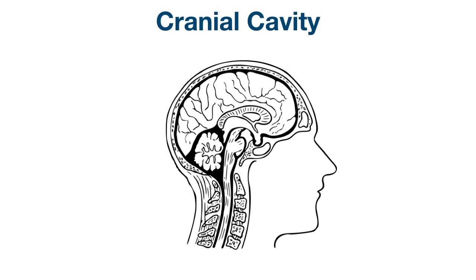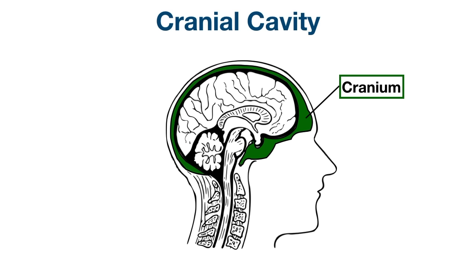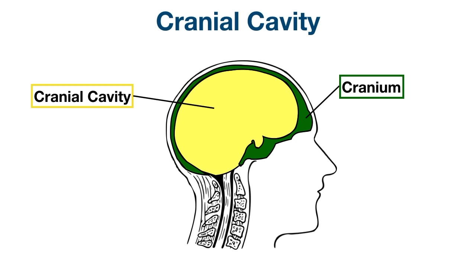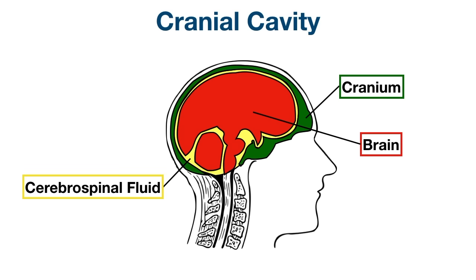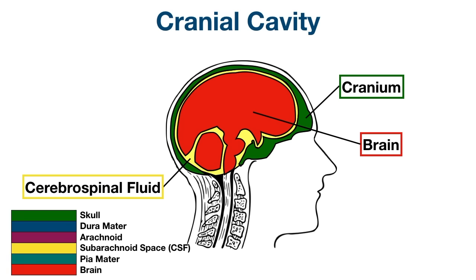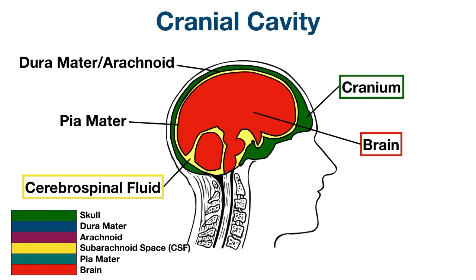We're looking at a side view — a sagittal view — of the brain and skull. The cranial cavity is enclosed by the cranium or skull, highlighted in green, which has formed an empty space shown in yellow. The cranial cavity contains the brain, colored in red. The cranial cavity also contains cerebrospinal fluid or CSF, which helps protect and cushion the brain, located in the subarachnoid space between the meningeal layers. The cranial cavity is lined by the meninges: the pia mater is the innermost layer adhering to the brain, the dura mater is the outermost layer, and the arachnoid is the middle layer.